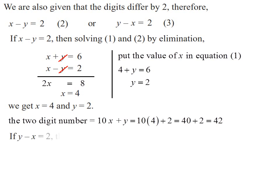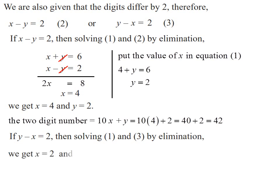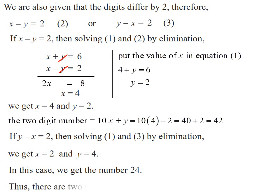For the third equation, y minus x equals 2, solving equations 1 and 3 by a similar method gives x equals 2 and y equals 4. So the number is 10 into 2 plus 4 equals 24. There are two numbers — 42 and 24 — which satisfy the given conditions.